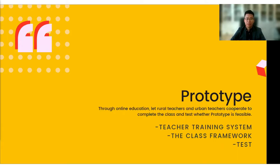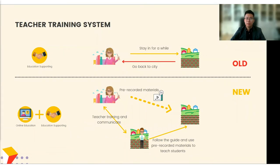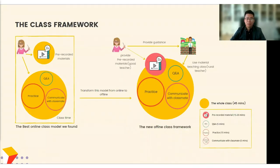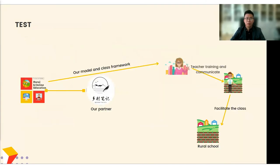Our prototype uses online education to enable rural teachers and urban teachers to cooperate to complete classes and test whether the prototype is feasible. It consists of two parts: a training system for rural teachers and a template for classroom teaching design. Our research concluded that the best online education model has teachers recording knowledge in advance and playing videos to students before class, with class time focused on active communication. We cooperate with rural partners to enable teachers to complete the teaching of rural courses.